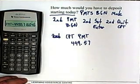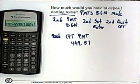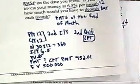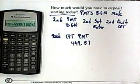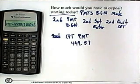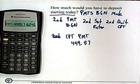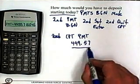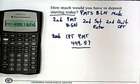Not much of a difference — our original answer was $452.01, so there's not much difference between making payments at the beginning versus the end. It's about a $2 and some cents difference. But if we make the payments at the beginning, then we will be making payments of $449.57.